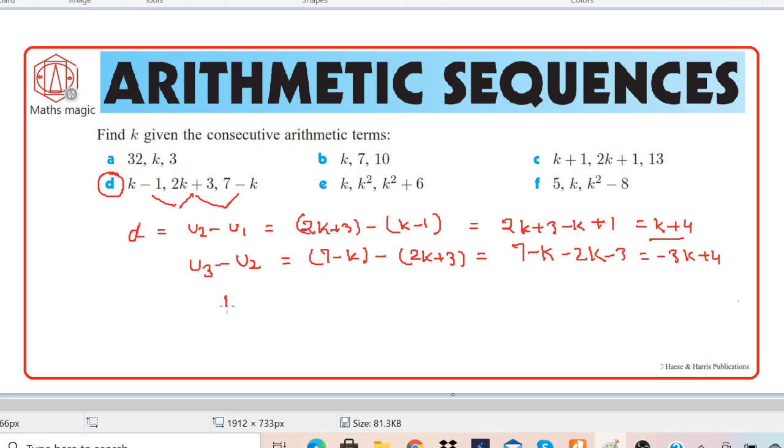So we can write k plus 4 is equal to negative 3k plus 4, and then simplify this.